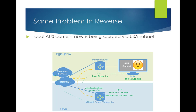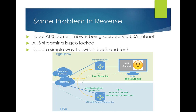Now I've got the same problem in reverse. All the local Australian content I want to stream to my Roku is being sourced via the US, so it's getting geo-locked. I need a simple way to fix that so I can switch the tunnel on and off. If I want to get to Australian content, I turn the tunnel off and reach it via my normal internet connection. If I want US stuff, I turn the tunnel back on.